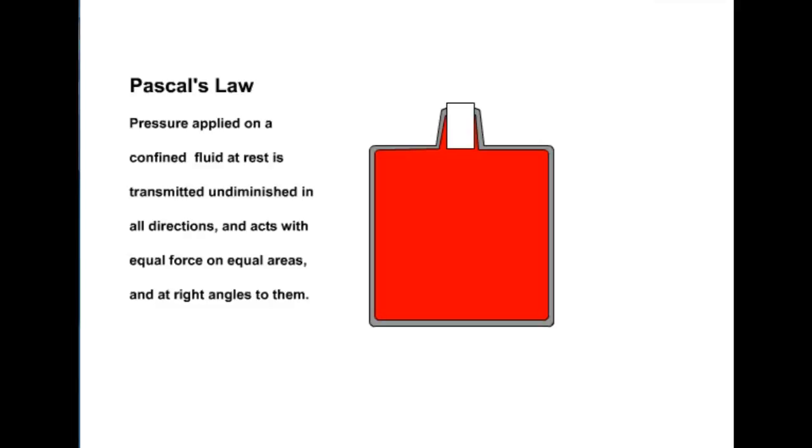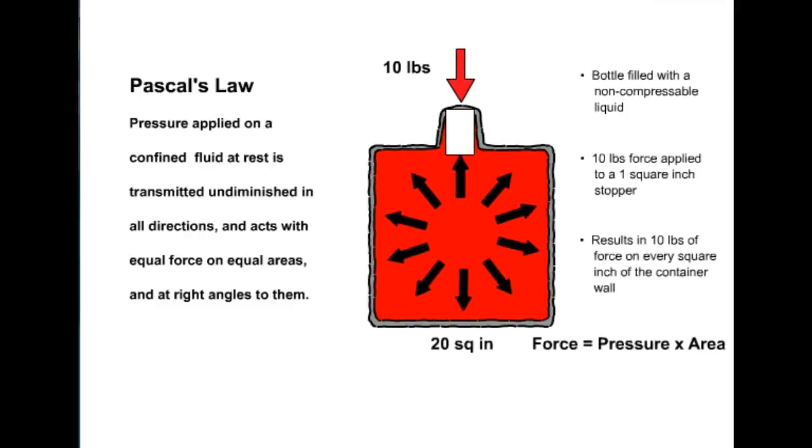In the following illustration, we have a vessel filled with a non-compressible fluid. If 10 pounds of force is applied to a 1 square inch stopper, the result would be 10 pounds of force on every square inch of the container wall. If the bottom of the container was 20 square inches total, the resultant force would be 10 psi times 20 square inches, or 200 pounds of total force, since force equals pressure times area.